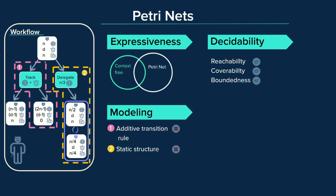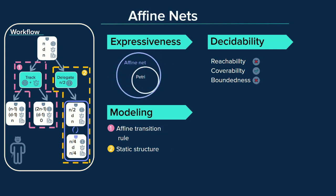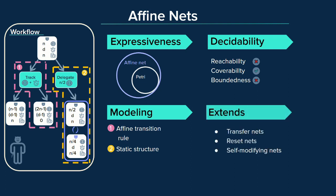Fortunately, Petri nets possess several extensions that address these limitations. One of these is the affine net, a model unifying reset, transfer, and self-modifying nets with a concise syntax. This solved his first issue.